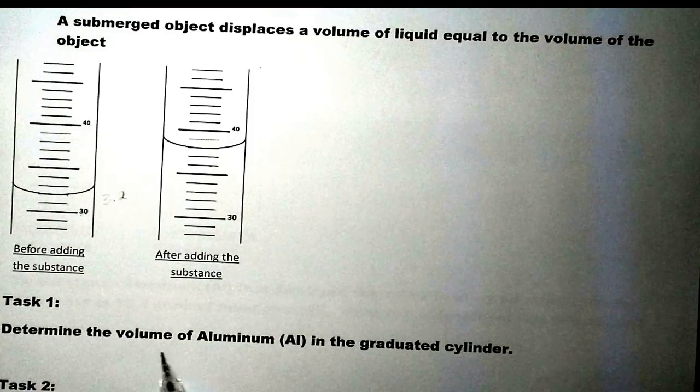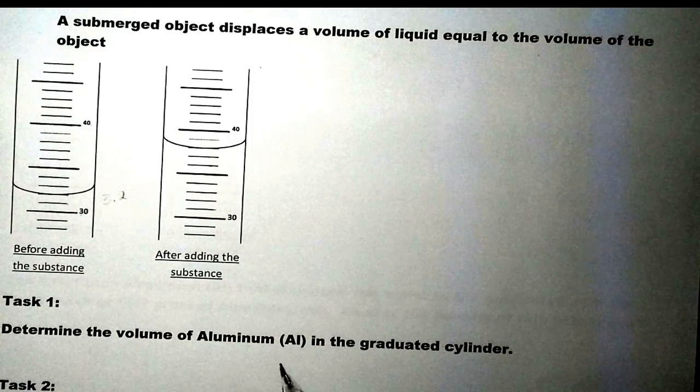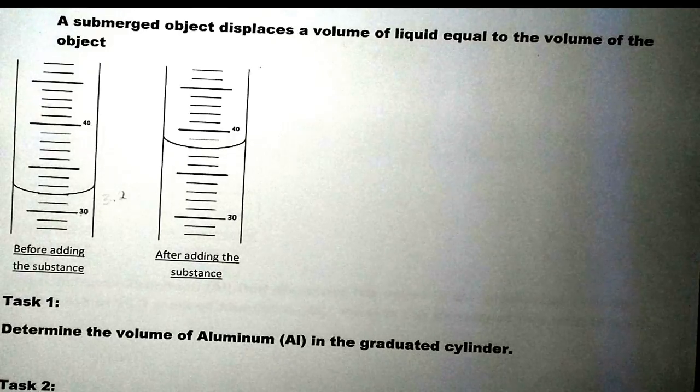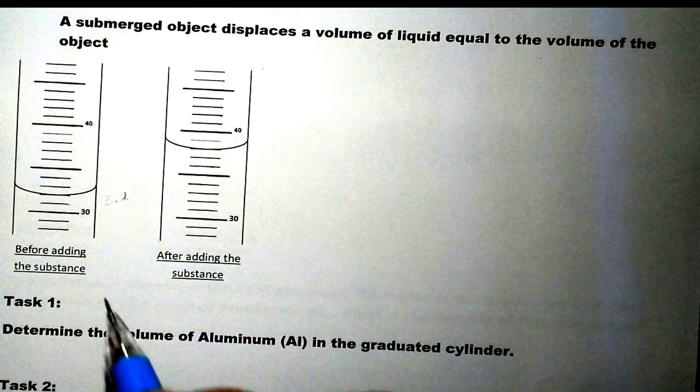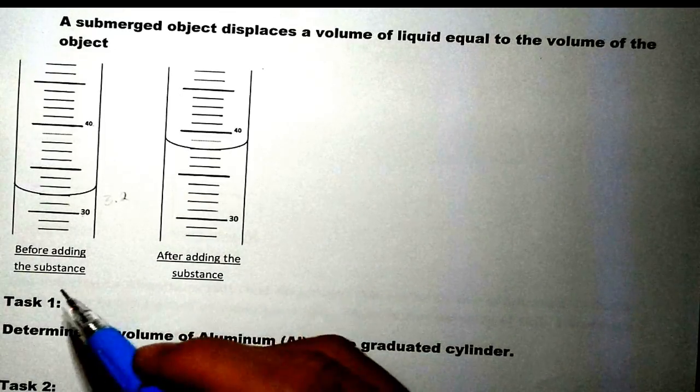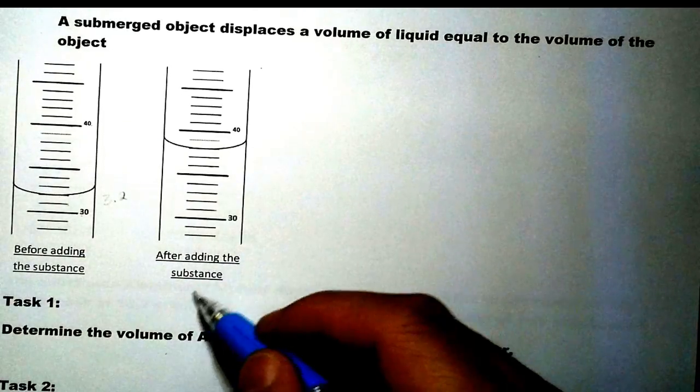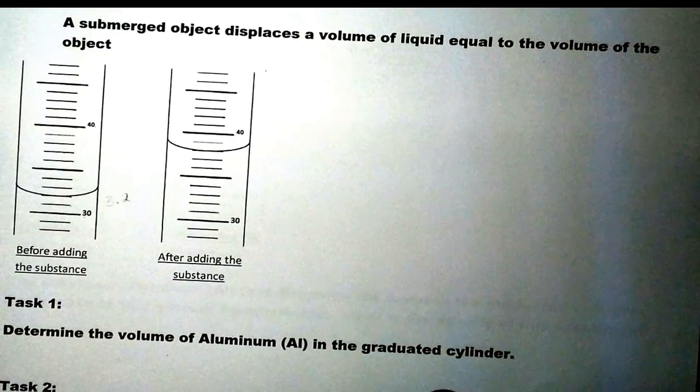Here we have: determine the volume of aluminum in the graduated cylinder. So how it works is that I have two graduated cylinders. One is before adding the substance, and of course you don't want to see the substance at all because it's right on the bottom, sunk all the way to the bottom.